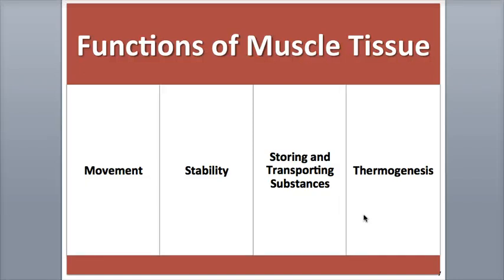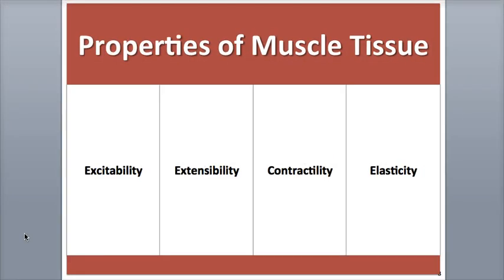The last major function of muscle tissue is generating heat. Thermogenesis is a heat-generating process that occurs when muscles contract. This heat helps maintain normal body temperature homeostasis during thermoregulation. When our body temperature drops, our muscles can contract involuntarily during shivering, which helps increase our body temperature. There are four major properties of muscular tissue that allow it to carry out its functions and help in the body's homeostasis. These properties are electrical excitability, extensibility, contractility, and elasticity.